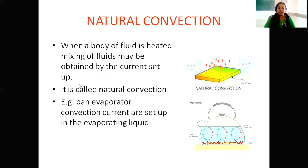Natural convection: when a body of fluid is heated, mixing of fluid is obtained by the currents set up, then the process is known as natural convection. In a pan evaporator, convection currents are set up in the evaporating liquid. Because of this convection current, warmer portions mix with cooler portions of the same material. This process is known as natural convection.